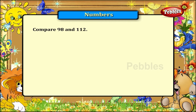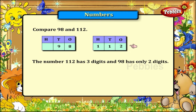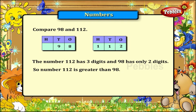Compare 98 and 112. The number 112 has 3 digits. 98 has only 2 digits. So number 112 is greater than 98. We write this as 112 greater than 98.